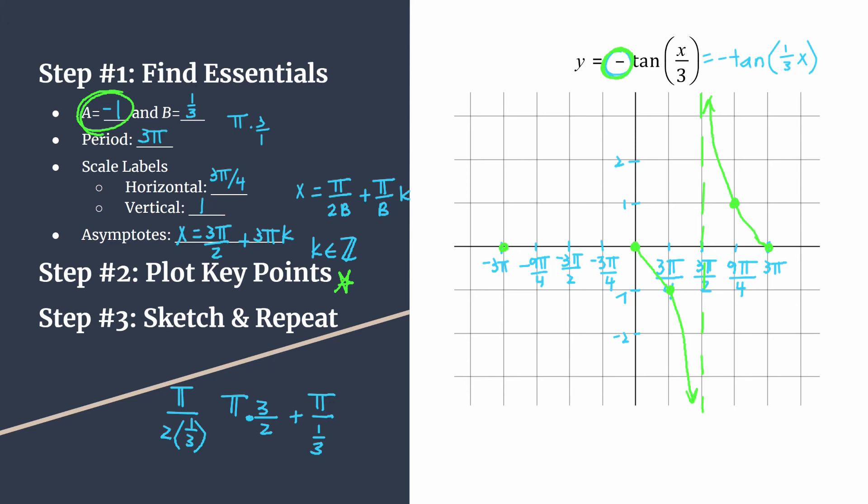So we'll have point, point, asymptote, point. So you see, we've mimicked the pattern that we had already set. And we'll sketch that in. And great, we've got it.